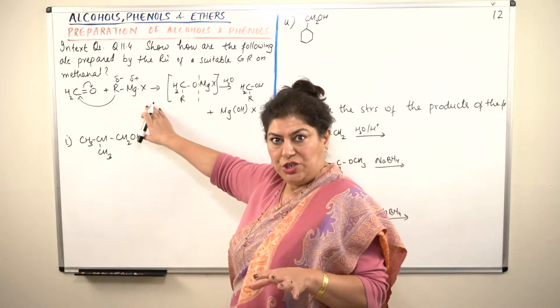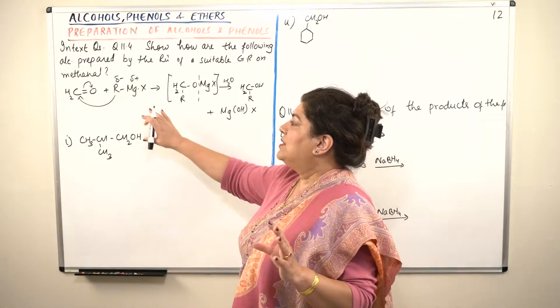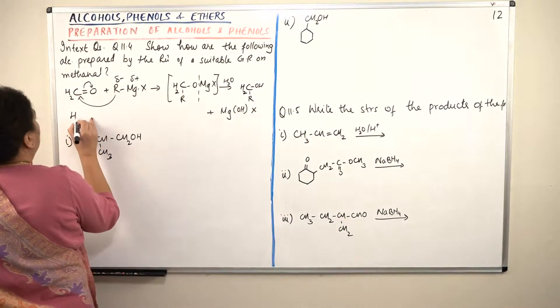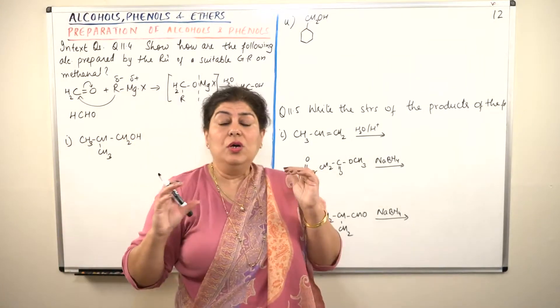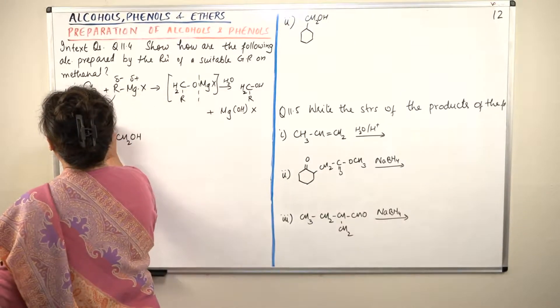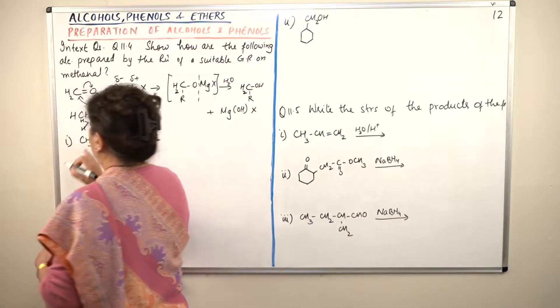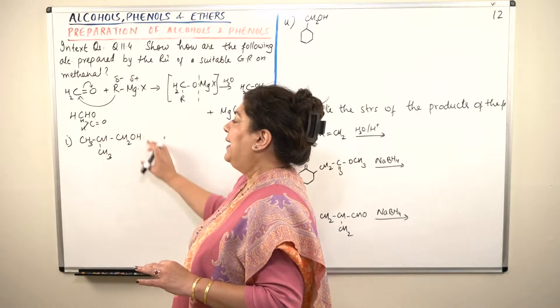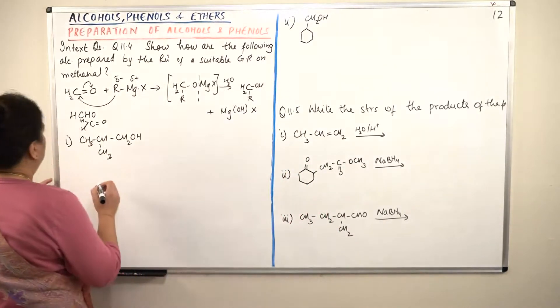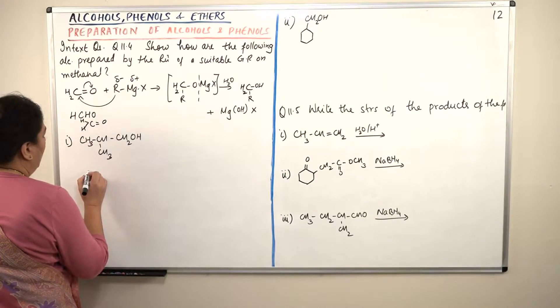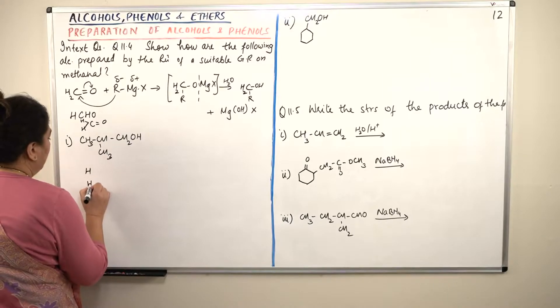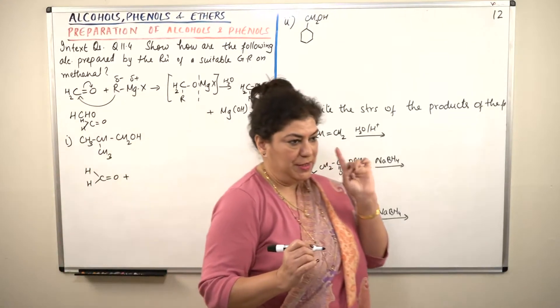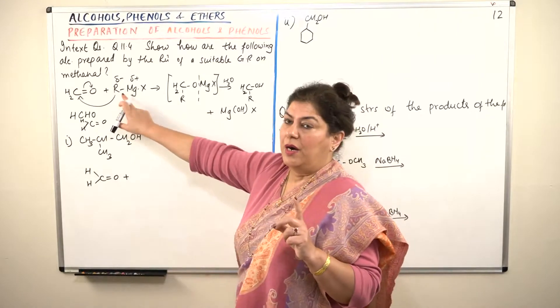You have been given this product. You have to find out which Grignard reagent has to be used. And since the original product here, you had H2C double bond O or HCHO. HCHO as it is written. So where both the carbons, both of these are hydrogens and this is an oxygen. This is the basic structure of methanal. So this is what you have initially. And what do you need to get the resultant structure that is this? So let us write down.